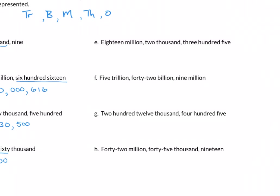Example e: eighteen million, two thousand, three hundred five. Eighteen million gives us 1-8, comma. For 'two thousand,' two goes in the right column, so we need zeros in the left and middle: 0-0-2, comma. Three hundred five: three in the hundreds column, no 'ty' or 'teen' so zero in the middle, then five — giving 3-0-5. The full number is 18,002,305.